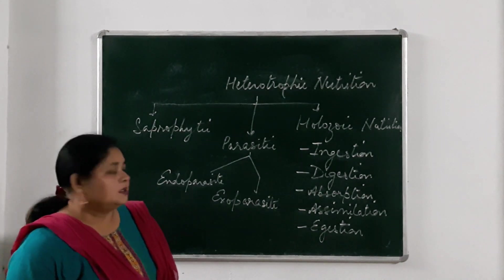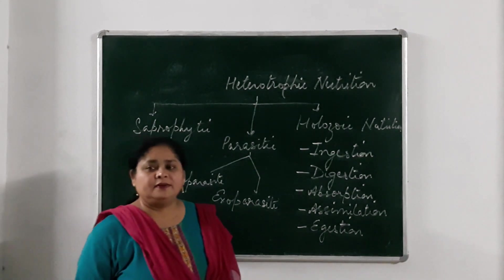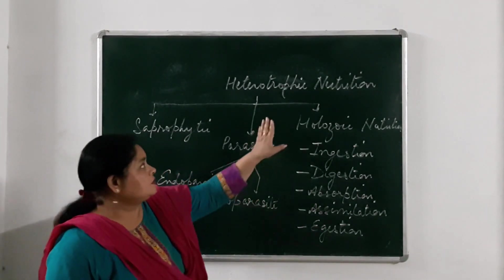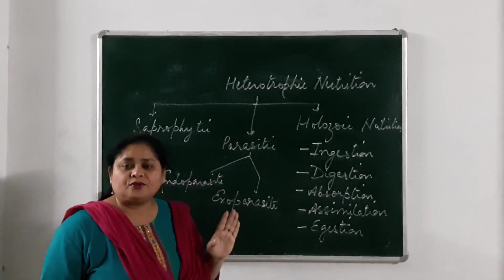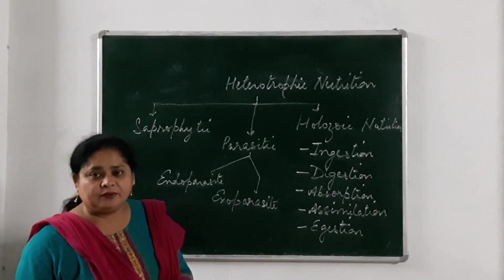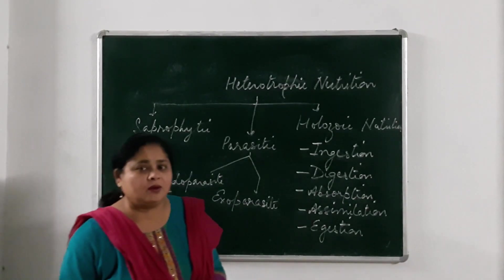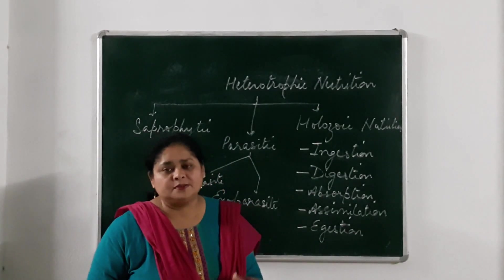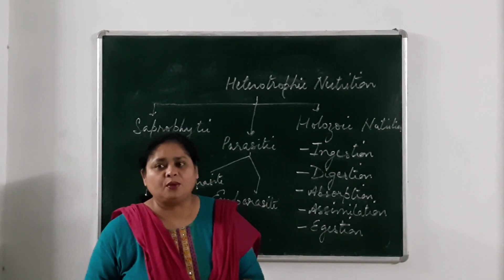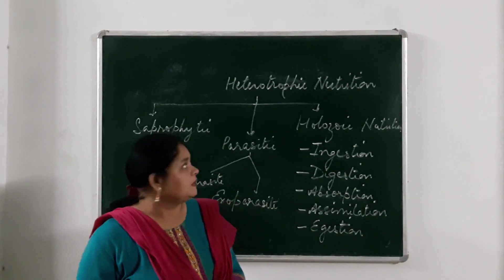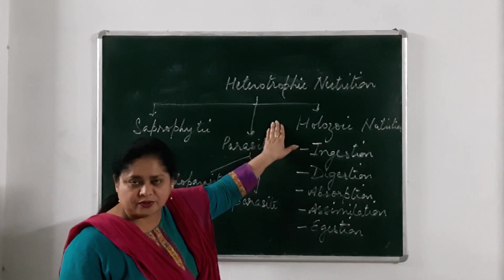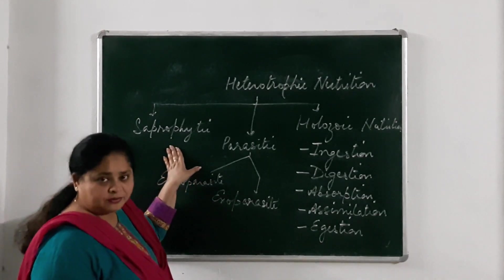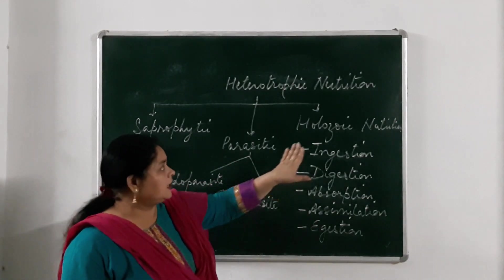Welcome students. In the previous session we studied about autotrophic nutrition. Now we will study about heterotrophic mode of nutrition. Hetero means different — a type of nutrition in which one living organism depends on other living organisms to obtain food energy, and these organisms are not capable of producing their own food. This is known as heterotrophic nutrition. We divide it into three categories: saprophytic, parasitic, and holozoic nutrition.